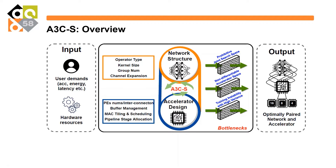The network structure search space is parameterized by options of operator type, kernel size, group number, and channel expansion. It parameterizes each operator to form a whole network structure for the deep RL agent. The accelerator design is parameterized by parameters like number of processing elements, their interconnection schemes, buffer management schemes, MAC tilings, multiply-and-accumulate unit tilings and schedulings, and pipeline stage allocations, which are input to a predefined hardware template to form a generic hardware design space.